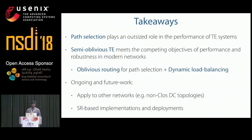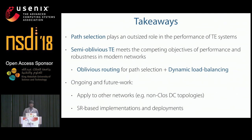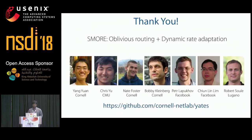To summarize: path selection is critical to the performance and reliability of traffic engineering systems. Semi-oblivious traffic engineering, which combines oblivious routing for path selection with dynamic rate adaptation, meets the competing objectives of traffic engineering by providing near-optimal performance and a high level of reliability. We have made our implementation open source on GitHub, so feel free to check it out.